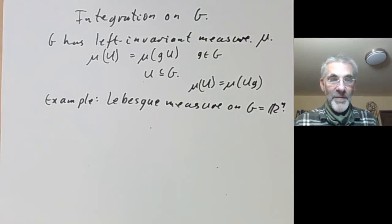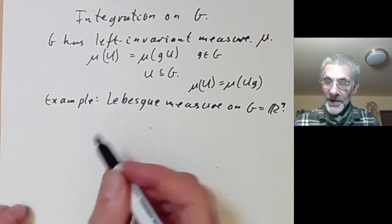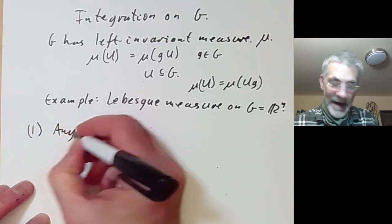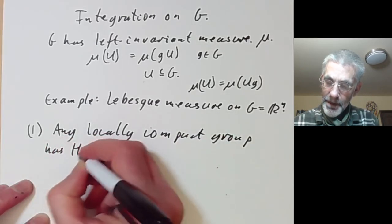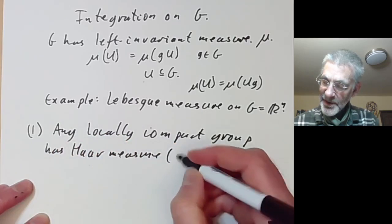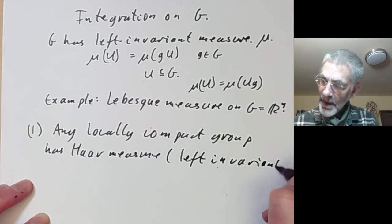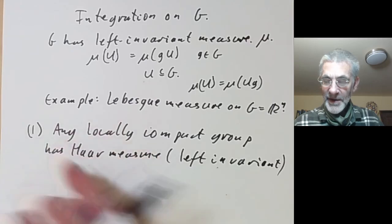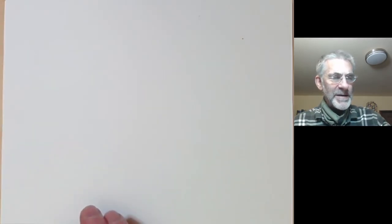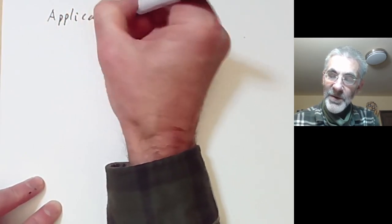I'm going to give three different methods of showing the existence of a measure on a Lie group. The first is to cheat a bit and just use the result that any locally compact group has a Haar measure which is left invariant, and moreover this Haar measure is unique up to multiplication by a constant. Lie groups are locally compact groups so this applies to them. That's fine as an existence theorem but doesn't really help if you actually want to calculate with the measure. However, there are a few applications where you just need to know that a measure exists.